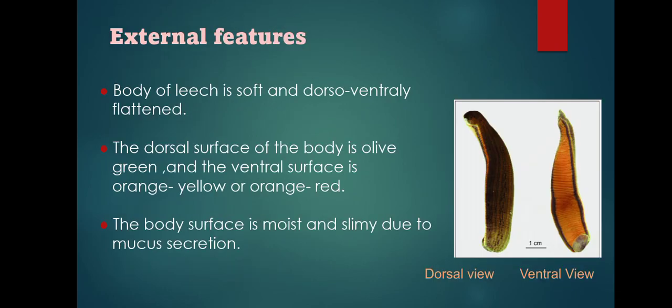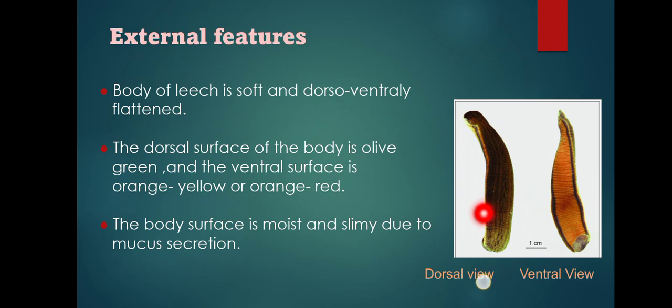The external features of the leech: the body is soft and dorso-ventrally flattened. The dorsal surface is olive green and the ventral surface is orange-yellow or orange-red. The body surface is moist and slimy due to mucous secretion. The diagram shows the dorsal and ventral view of Hirudinaria.